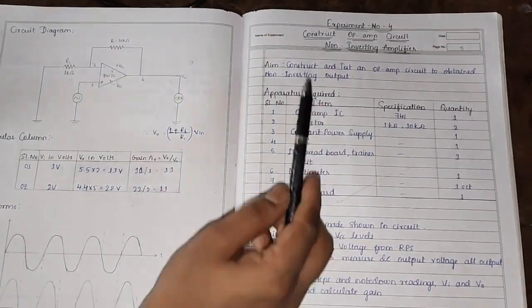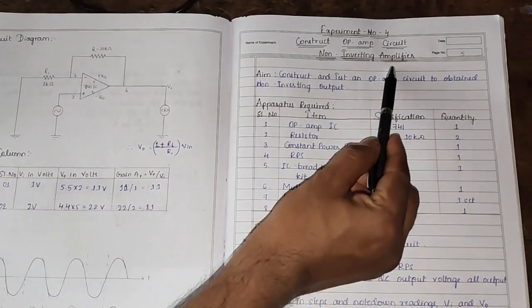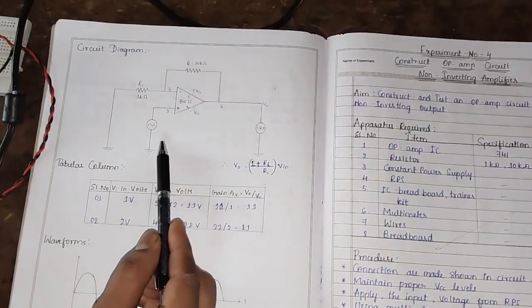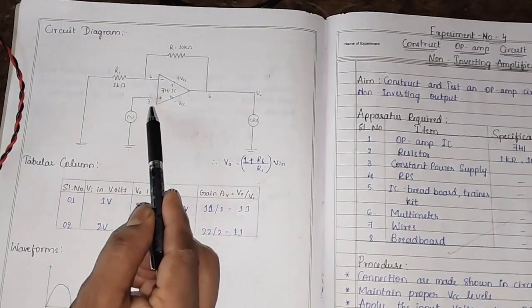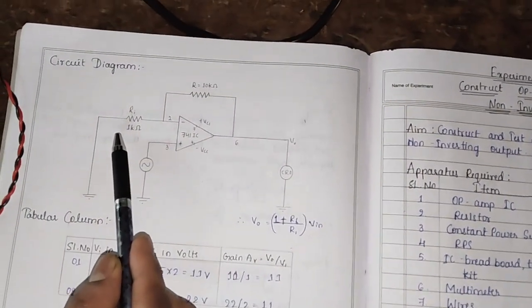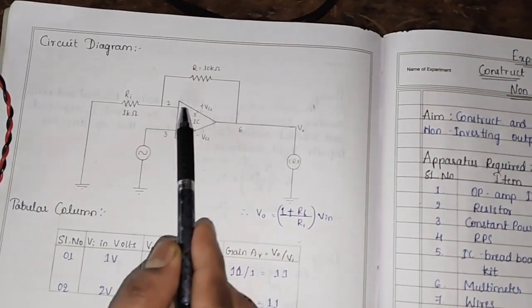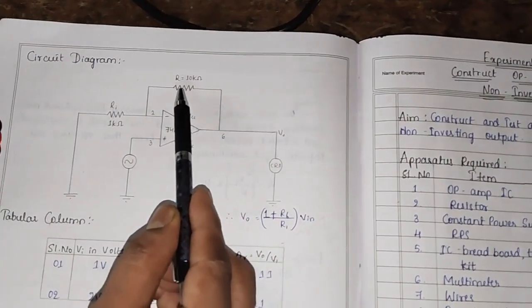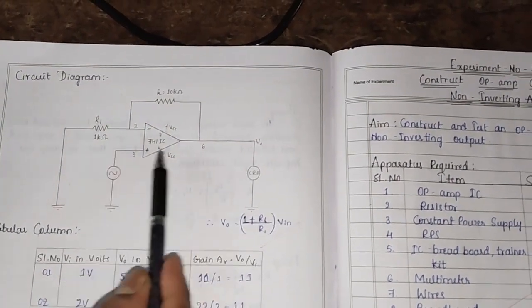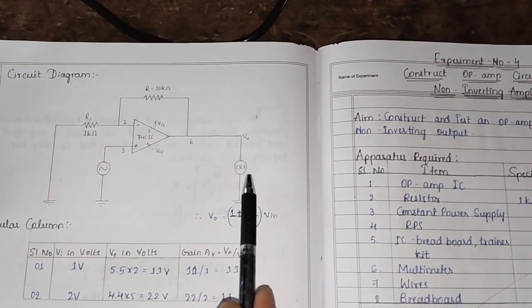In this video, I will explain how to perform an experiment on a non-inverting amplifier using an op-amp. In the circuit diagram, we can see it consists of op-amp IC 741, an input resistor R1 of 1 kilo ohm, and a feedback resistor of 10 kilo ohms. Once we connect these resistors in this fashion, the circuit acts as a non-inverting amplifier.